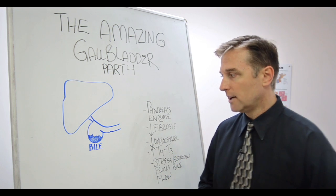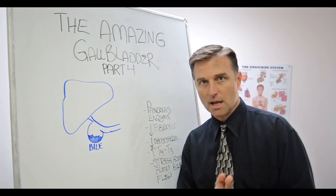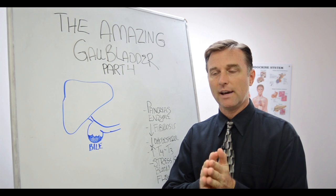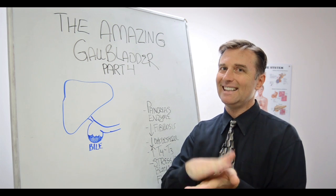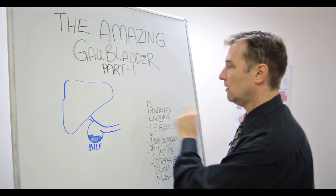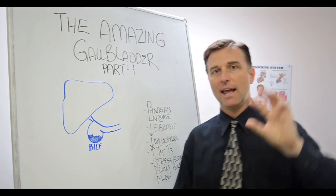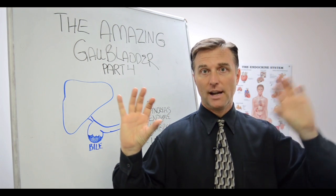Number one, the gallbladder releases bile that helps break down fat, but it doesn't break down fat all the way to the smallest particle. It needs help by this thing called the pancreas. The pancreas and the gallbladder work together to break down these fats.